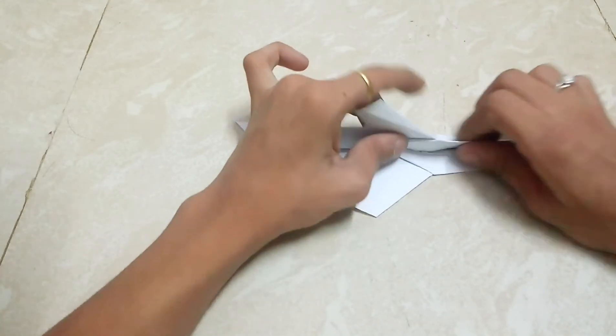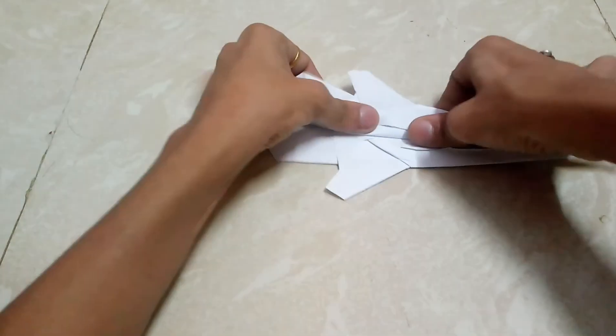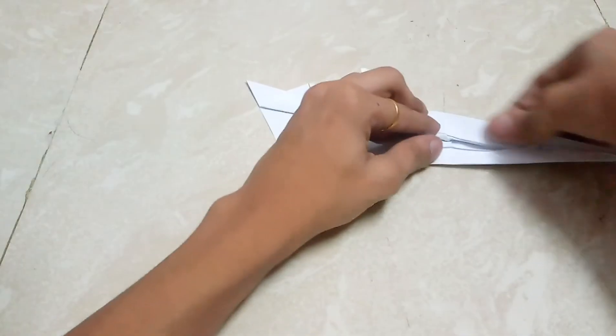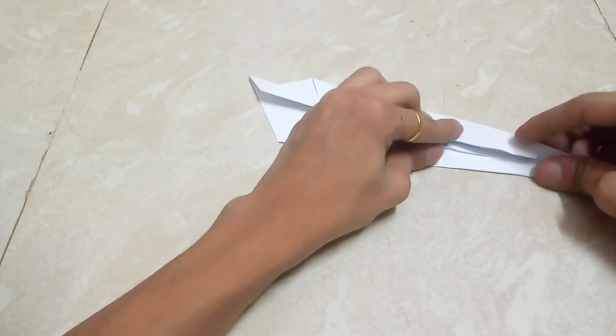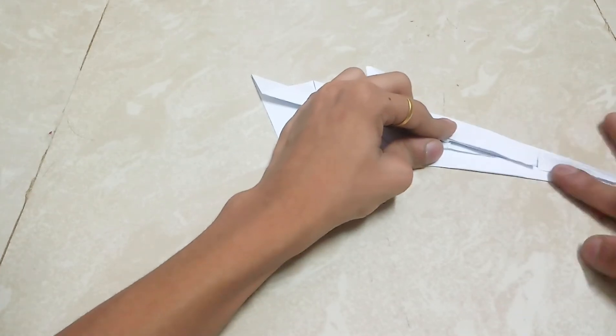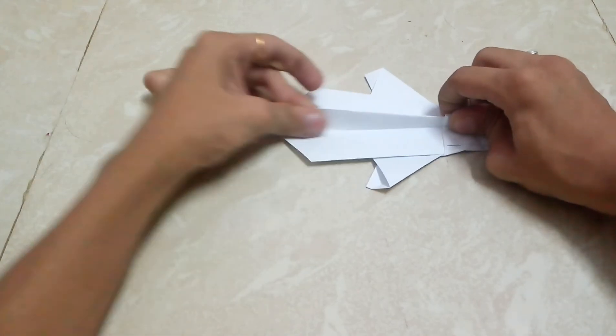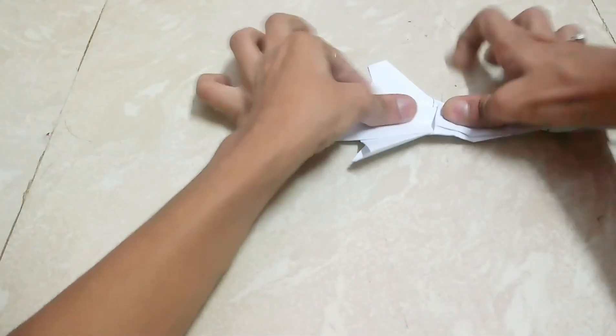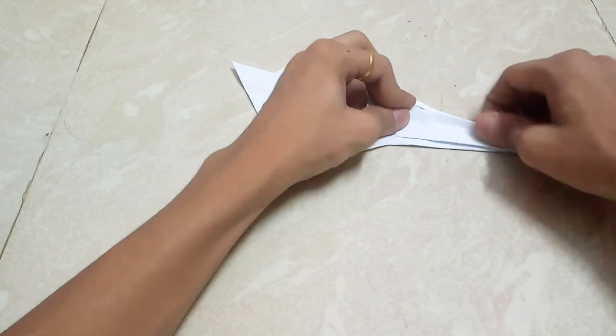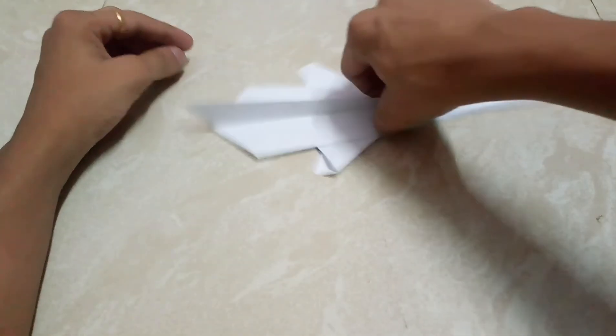After that, if you all know how to make wings, just fold it like this, flip it over and fold on the other side. So your plane is ready.